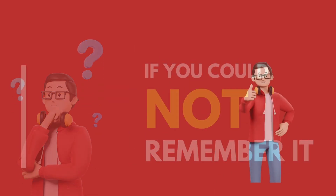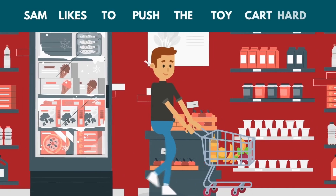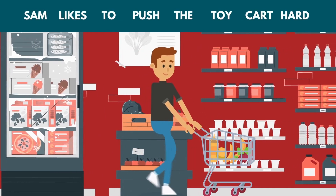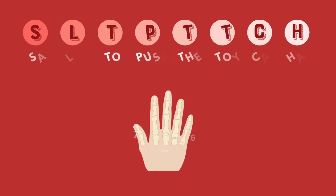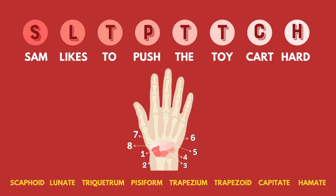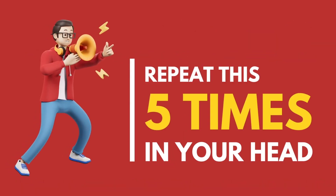If you could not remember it, try remembering this: 'Sam likes to push the toy cart hard.' Now try relating — S for scaphoid, L for lunate, T for triquetrum, P for pisiform, T for trapezium, T for trapezoid, C for capitate, and H for hamate. Repeat this 5 times in your head.